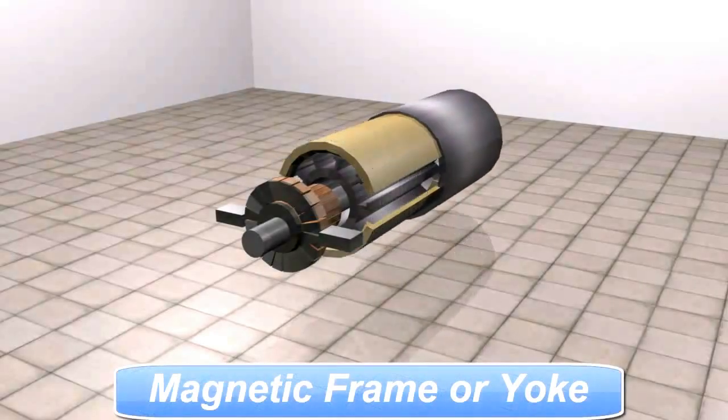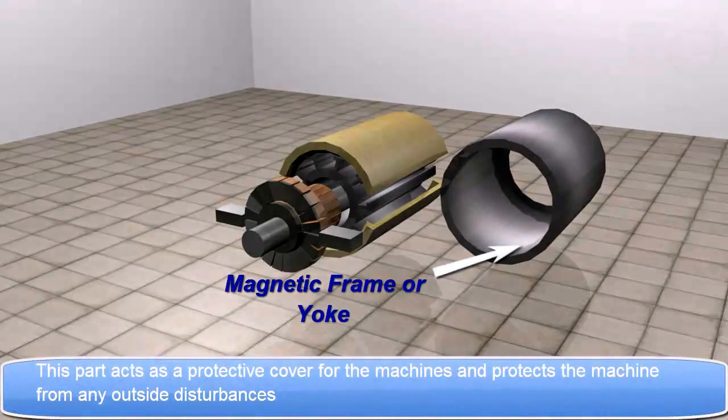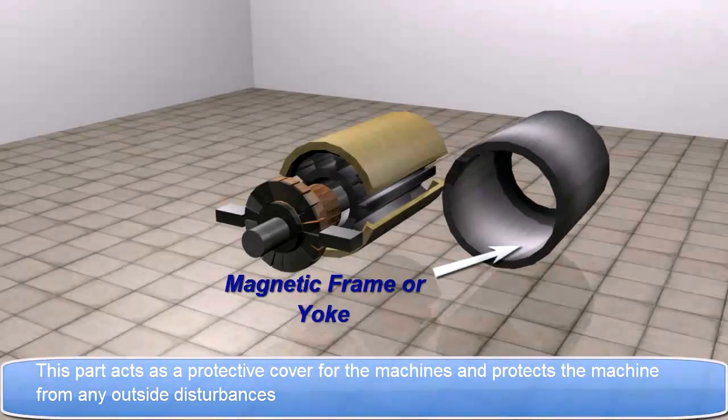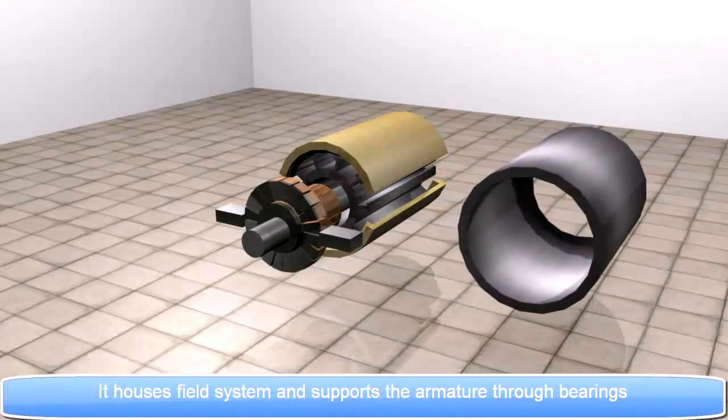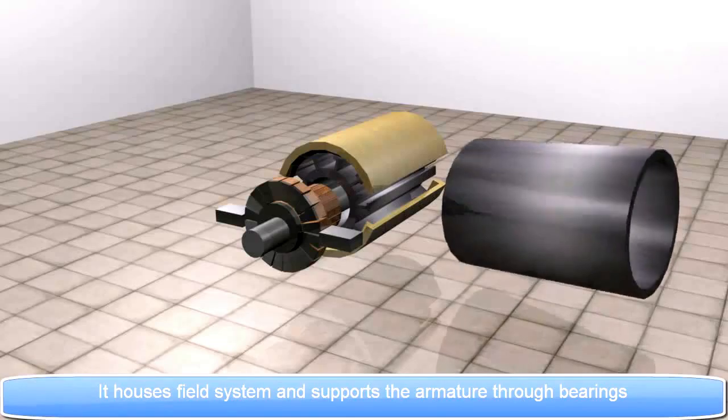Magnetic Frame or Yoke. This part acts as a protective cover for the machines and protects the machine from any outside disturbances. It houses field system and supports the armature through bearings.